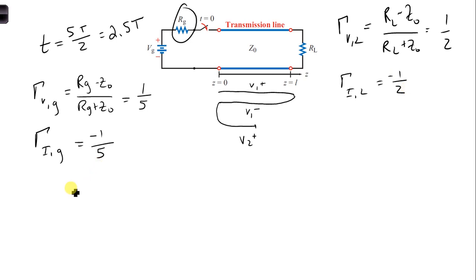Then we just calculated V1 plus, so we can get I1 plus from our answer to part A, V1 plus over Z0, same expression as you would use for a resistor. So we can plug in 6 volts for V1 plus over 50, and we get 0.12 amps for I1 plus.